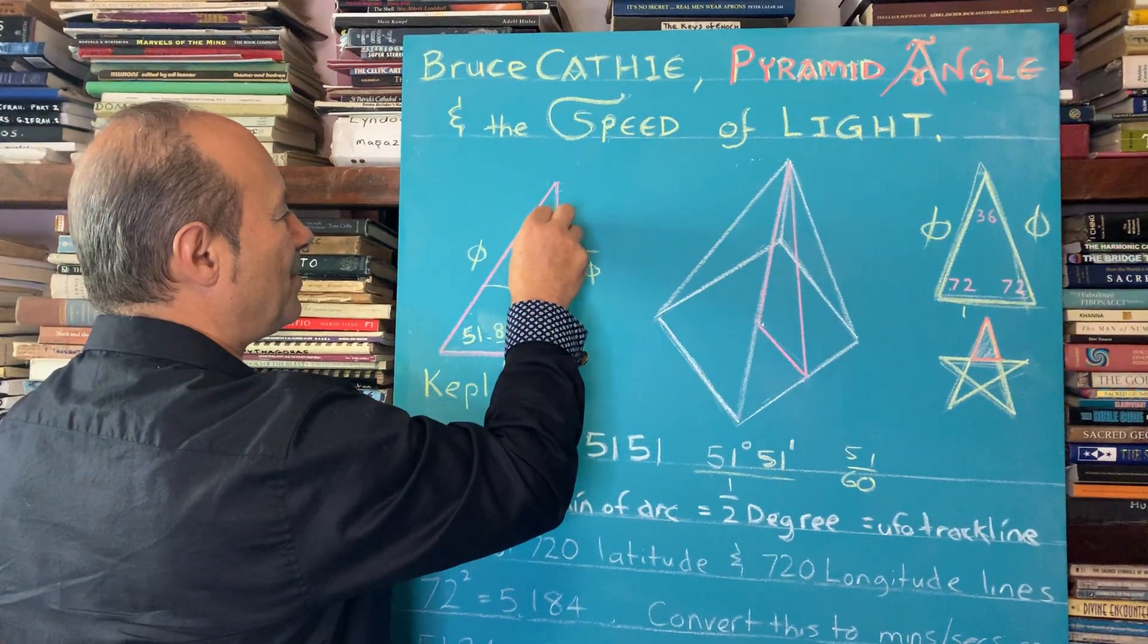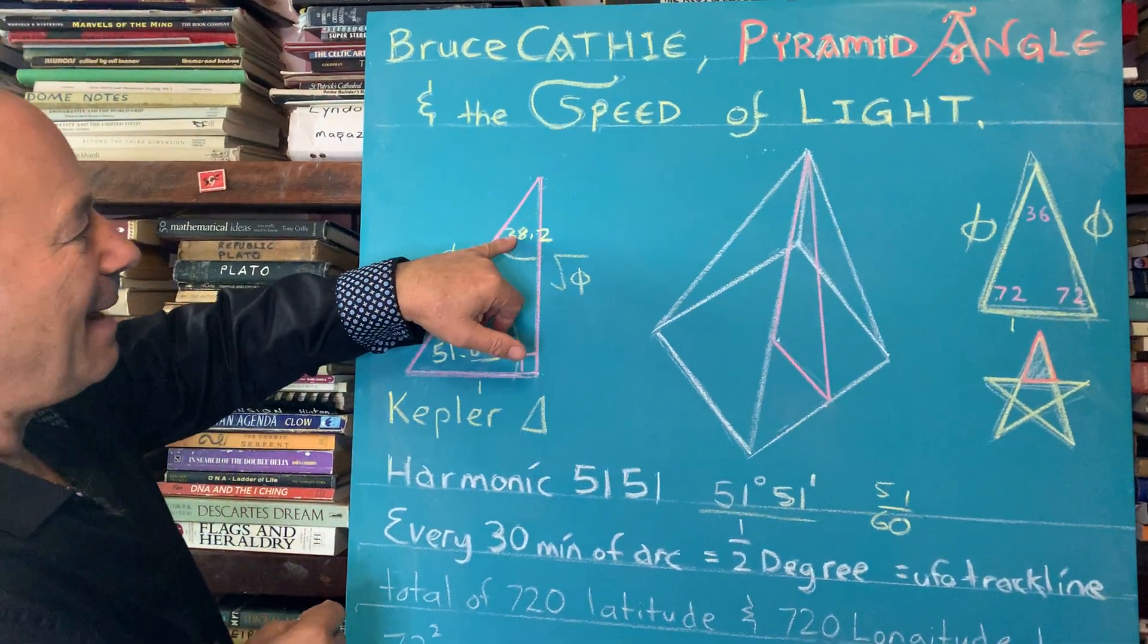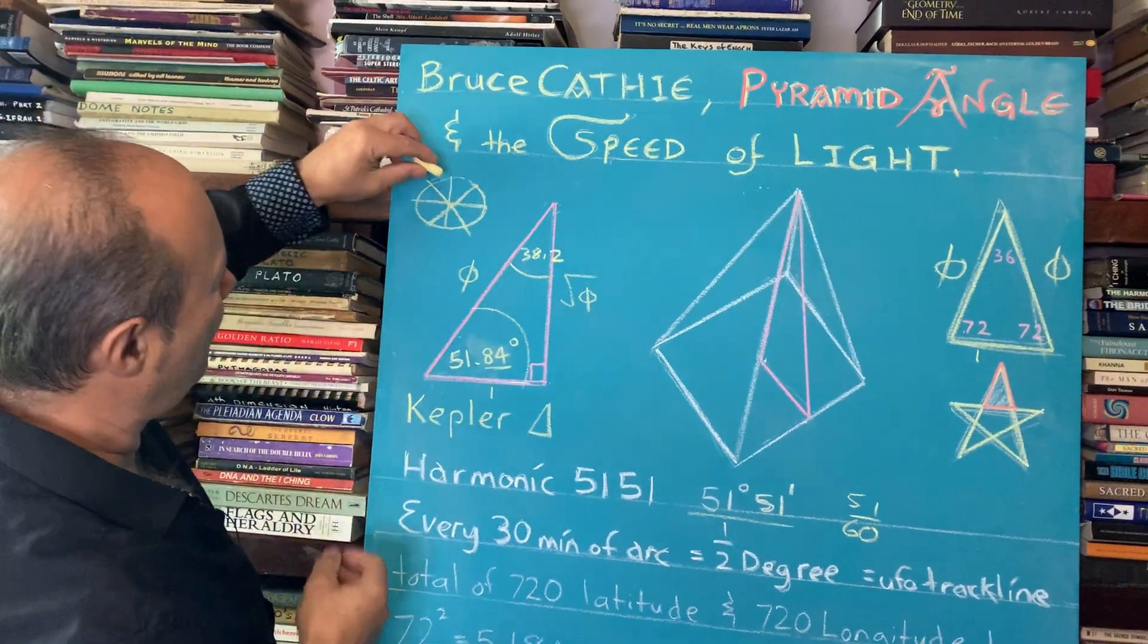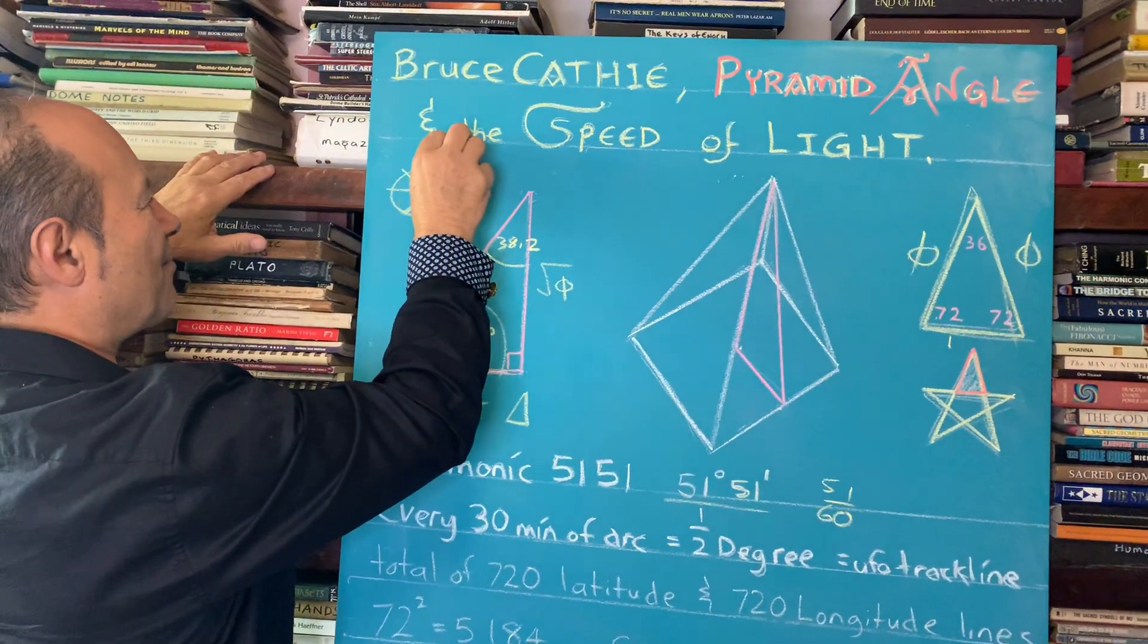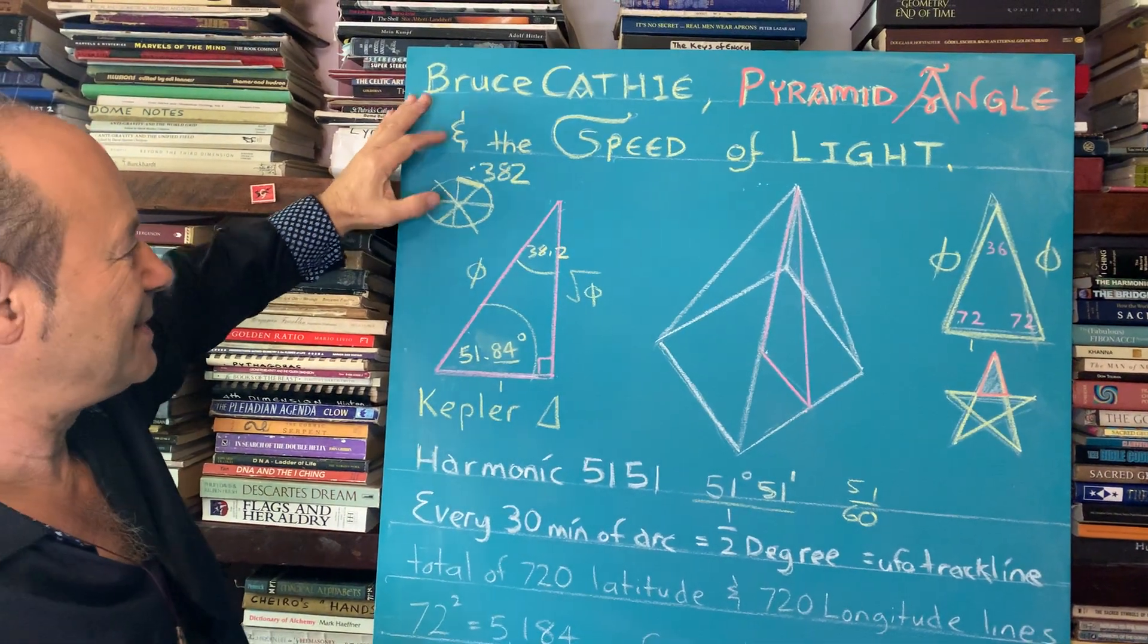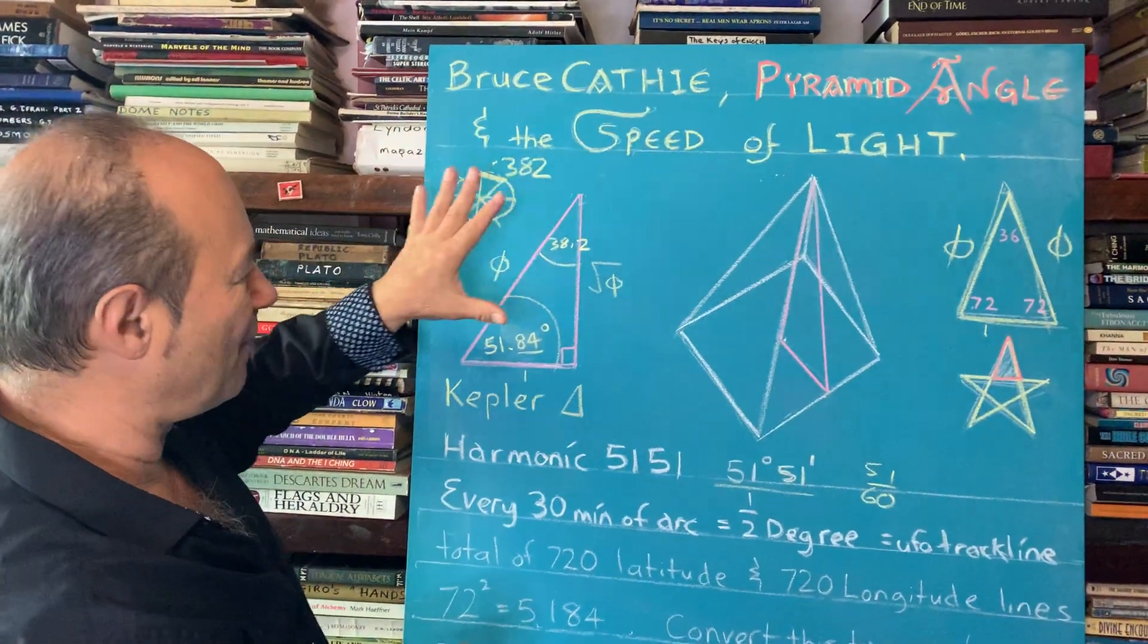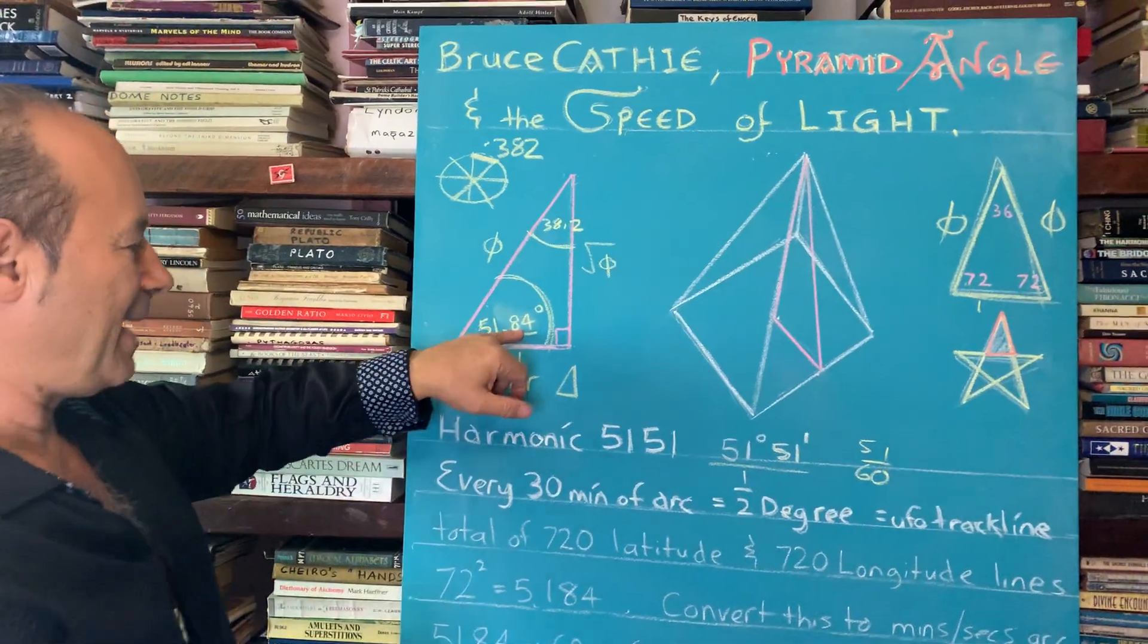This one up here was 38.2 degrees. We did a whole lesson where harmonic 382 happened to be, if we draw across and then divide it into eight, we looked at the octagon. That distance is called 0.382. That's because one into eight is about octaves. This is the octavization of light, the physics of light bending, understanding that there's golden phi relationships. But let's just look at 51.84.